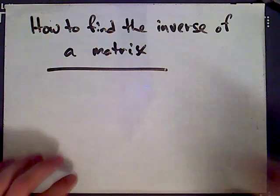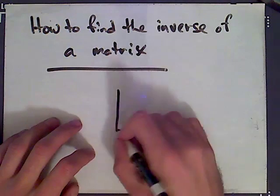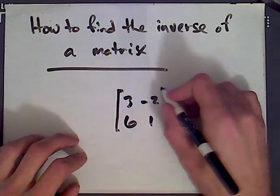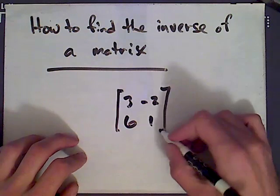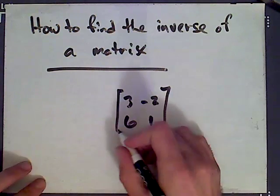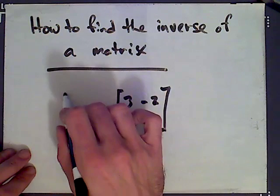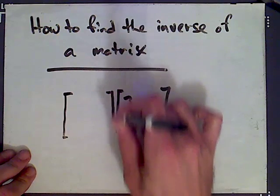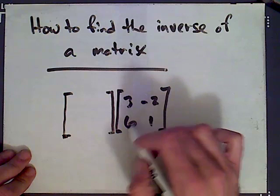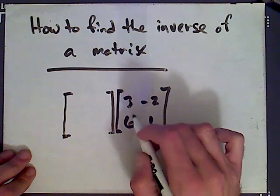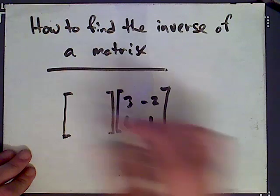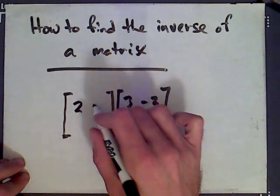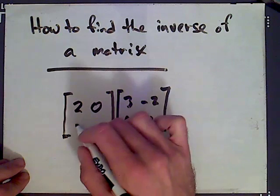So first let me go back and talk again briefly about elementary matrices and the fact that you can use elementary matrices to perform row operations. Say we start with our example matrix and we're trying to row reduce it to get a solution. The first thing we might do is multiply the top row by 2 to make this a 6 so that we can later subtract to get rid of this 6 down here. The corresponding elementary matrix would be the identity matrix multiplied by 2 in row 1. It would be this matrix here.